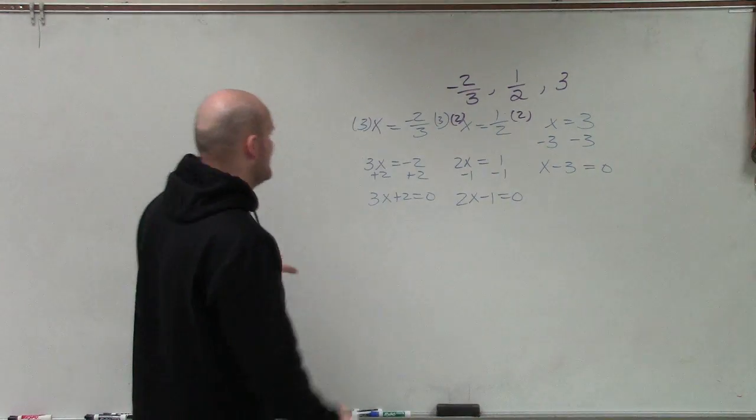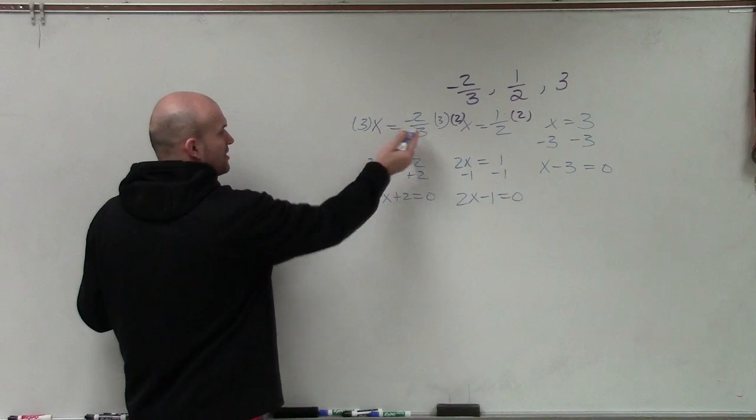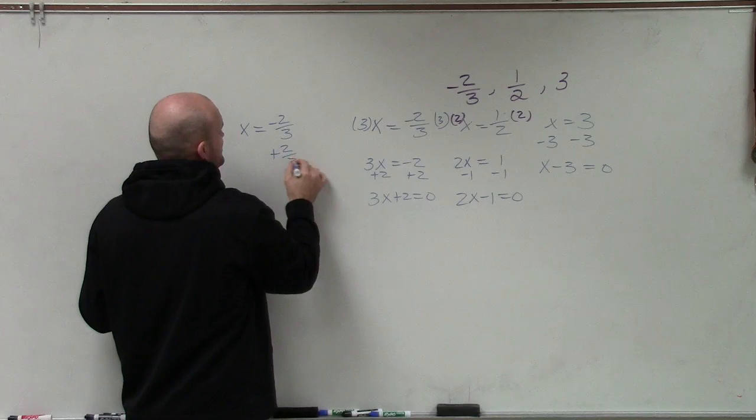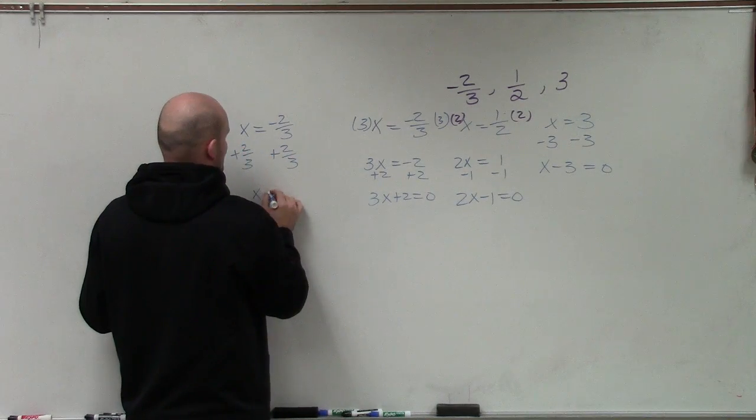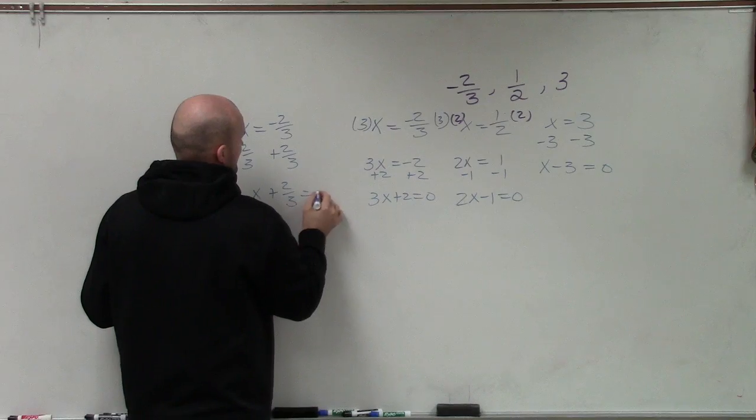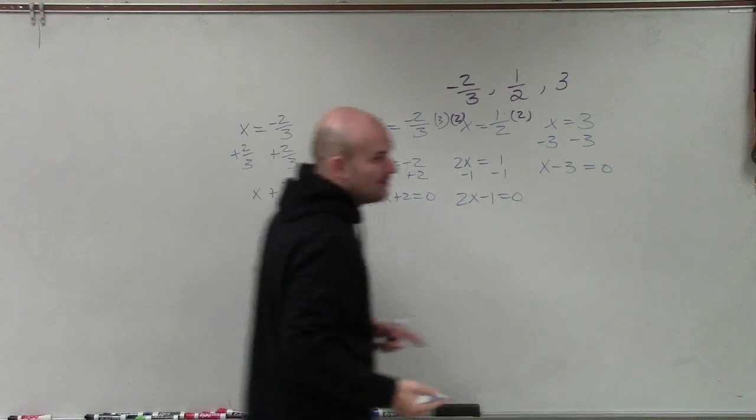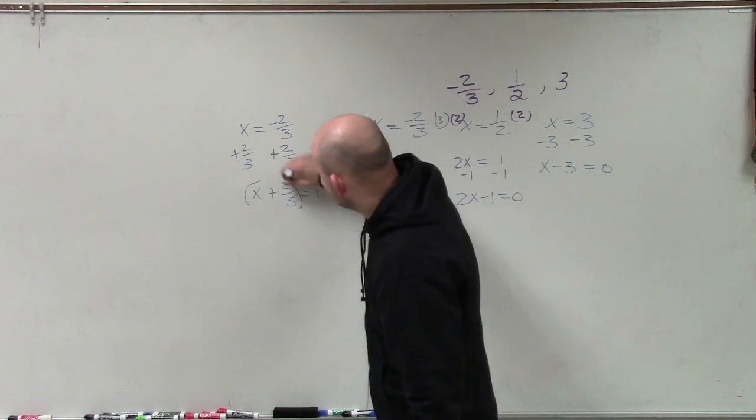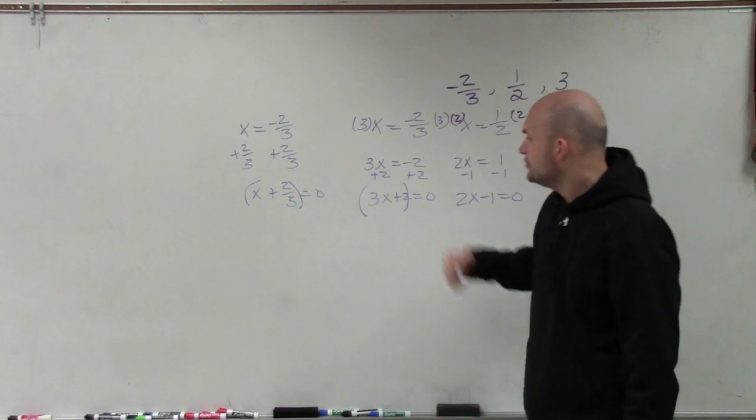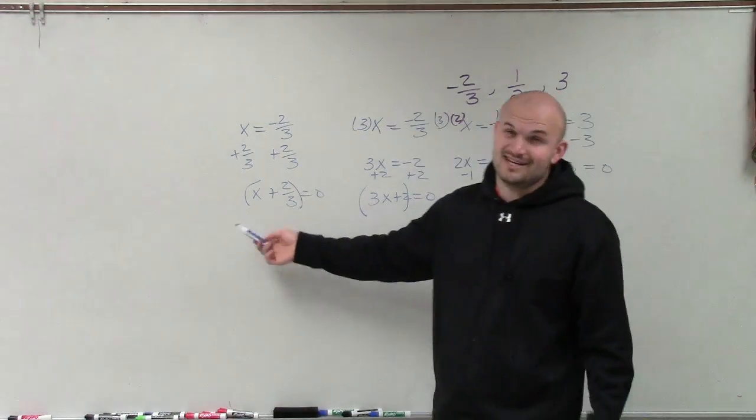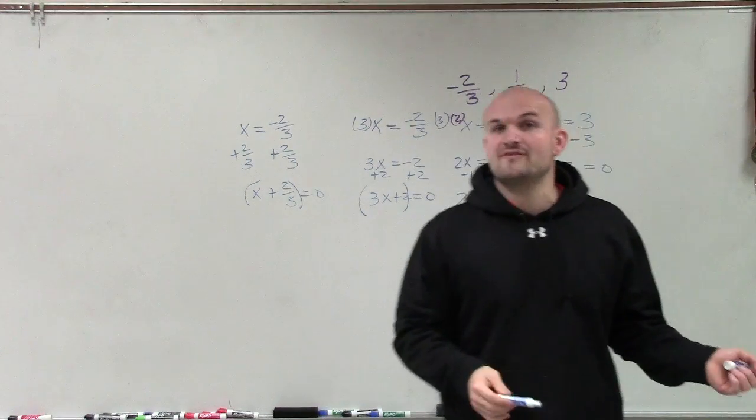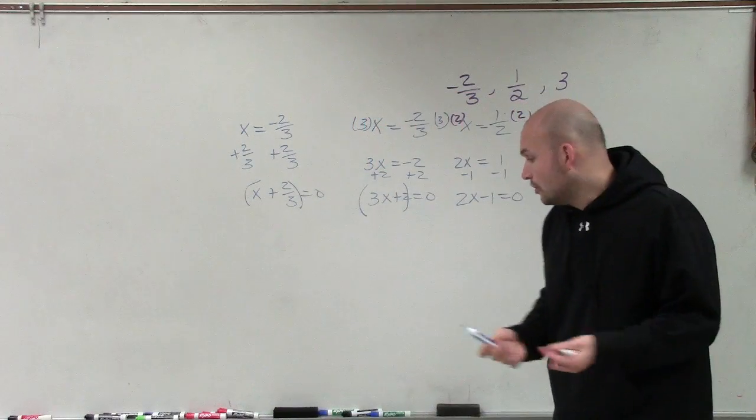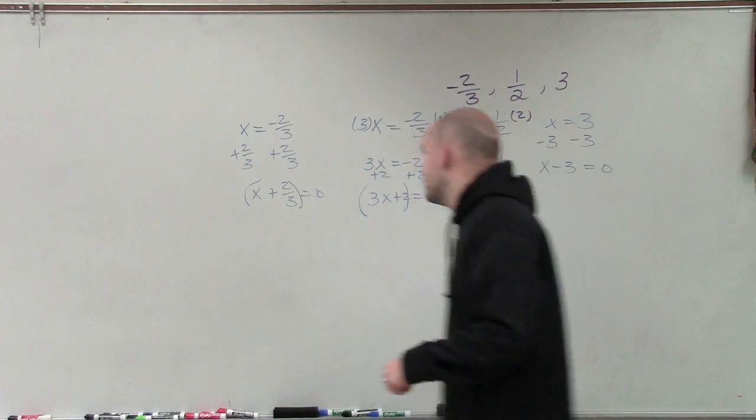Now it's important to understand that 3x plus 2 equals 0 and x plus 2/3 equals 0 are the exact same equations. They're equivalent to each other. However, if I'm going to use x plus 2/3 as a factor compared to 3x plus 2 as a factor, you can see this doesn't have any fractions and this does. So when I multiply that out with my other factors, this is going to produce fractional coefficients. This will not. And our goal is to produce a polynomial without any fraction coefficients.